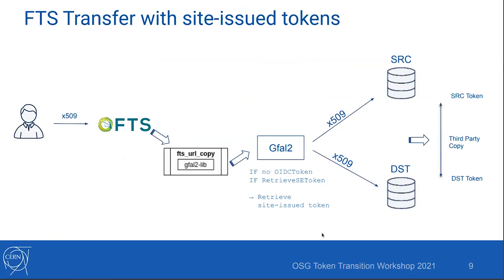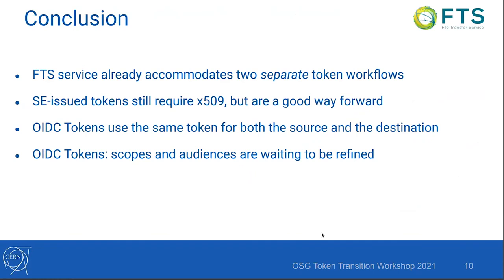The workflow for this kind of tokens: the user starts with an X.509 proxy certificate, speaks with FTS, and submits a transfer. Eventually FTS will start the transfer agent — the FTS URL copy component. This calls GFAL2, which checks: if we don't have a global OIDC token, and if we are set to retrieve the storage element token, that's when we exchange the X.509 proxy certificate and get the macaroon token. Then we start the third-party copy. We have a distinct token from the source and a distinct token from the destination. In conclusion, FTS accommodates two separate token workflows. The storage element issued tokens are kind of in between — they still rely on proxy certificates, but they are a good way forward. The TPC mechanism, whether it's OIDC token or storage element token, doesn't change: for HTTP these are macaroon tokens.